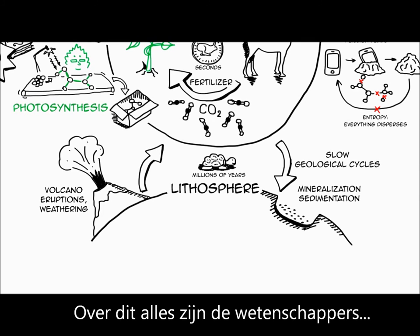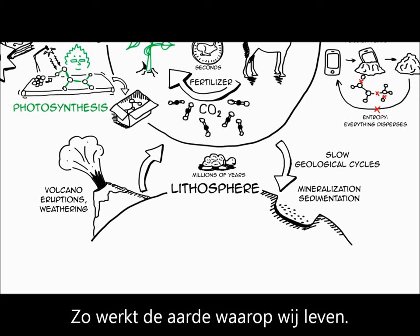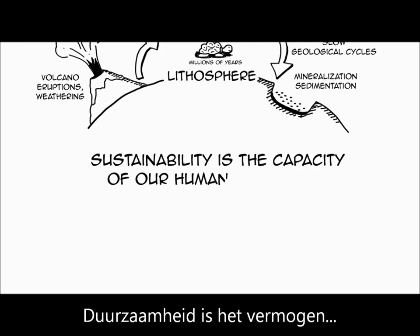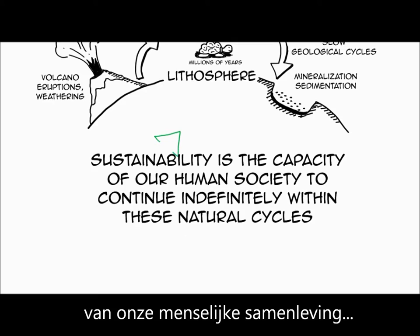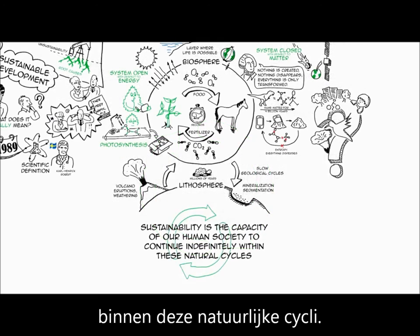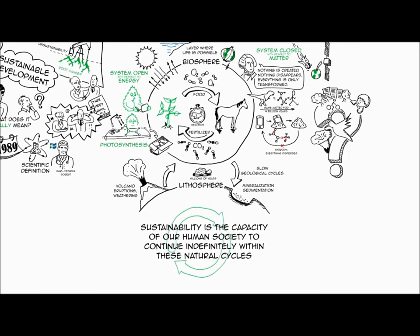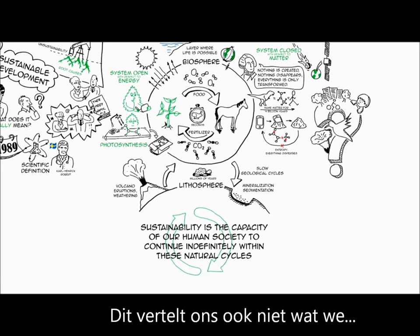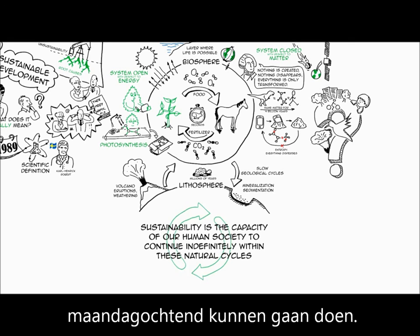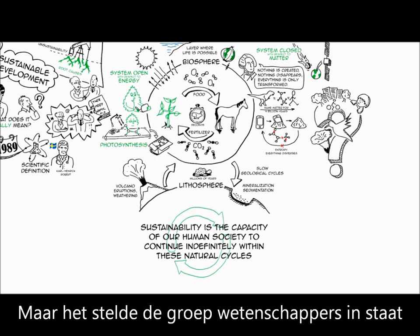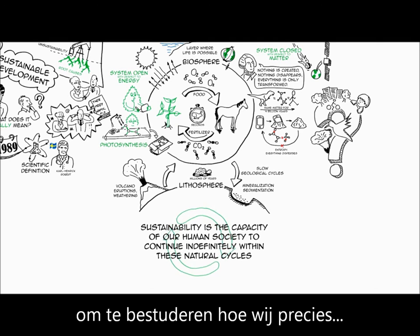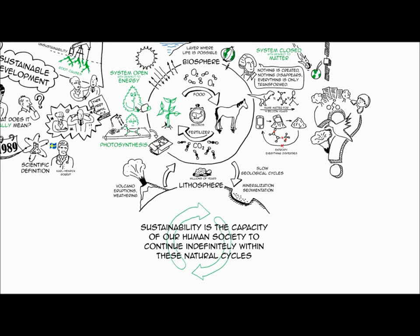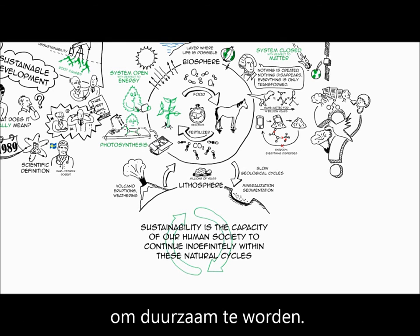So this is what the scientific community agreed upon — this is the world we live in. And so we can ask the question, what is sustainability? Well, sustainability is actually the capacity of our human society to continue indefinitely within these natural cycles. And sustainable development would be a development towards this state of sustainability. This does not exactly tell us what to do on Monday morning either, but it enabled the group of scientists to look at the things that we do to interfere with these natural cycles. And they found four root causes of unsustainability — and these are the four things that we need to stop doing to be sustainable.